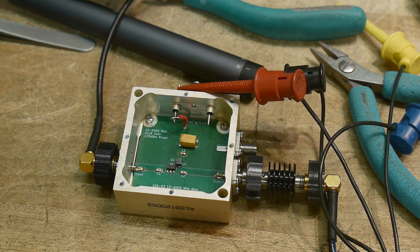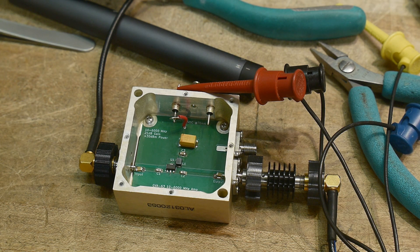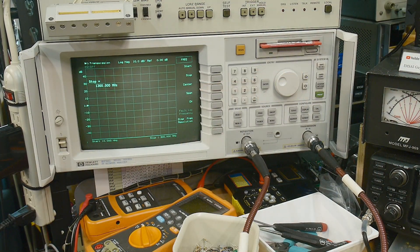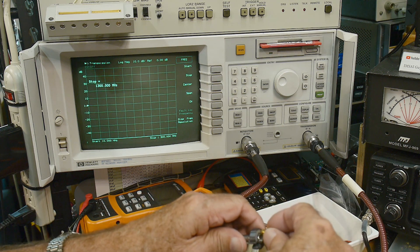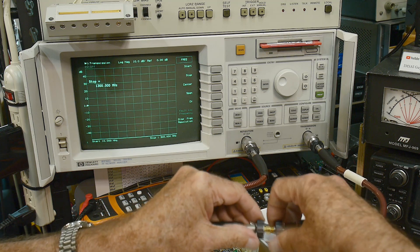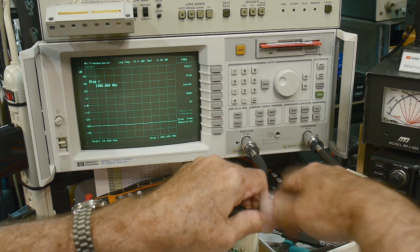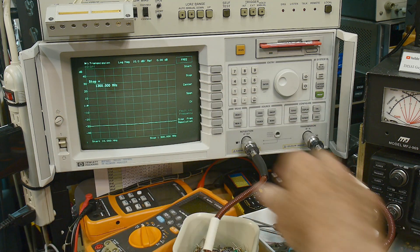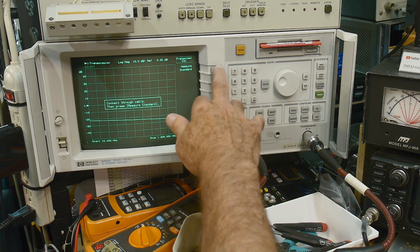Let's go ahead and measure it on the VNA and we can take a look at S11 just for fun. All right, let's do a through calibration on the VNA. We'll be measuring S21. We'll leave in the 30 dB pad and we'll zero it out with the 30 dB pad. You can see here we're right at minus 30 right now.